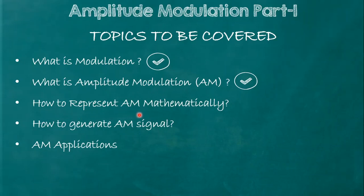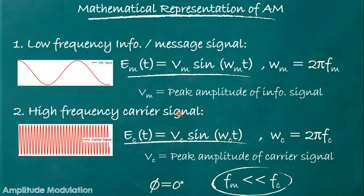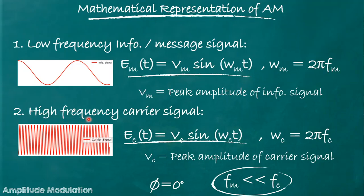Now let us move to how to represent the AM signal mathematically. First, let us represent the low frequency information signal and the high frequency carrier signal. The information or message signal is represented as m(t) = Vm sin(ωm·t), where Vm is the peak amplitude of the message signal and ωm = 2πfm. Similarly, the carrier signal is represented as ec(t) = Vc sin(ωc·t), where Vc is the peak amplitude of the carrier signal and ωc = 2πfc.